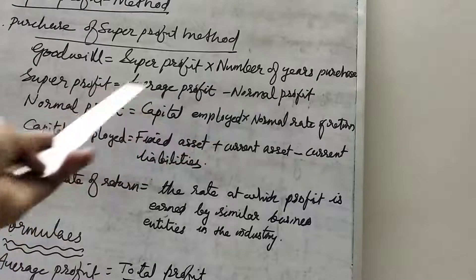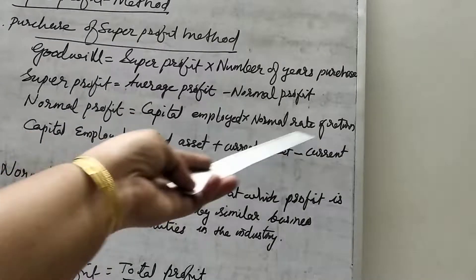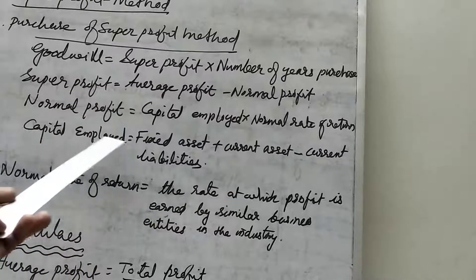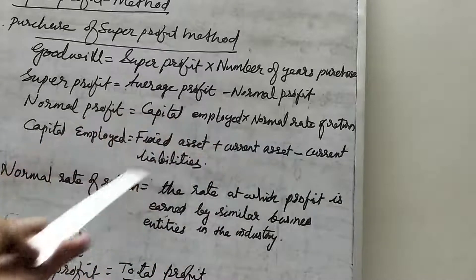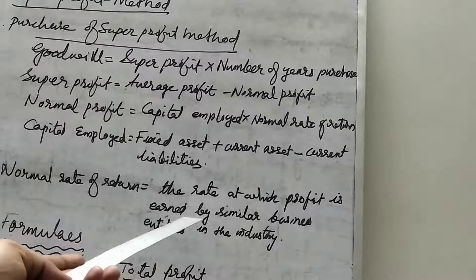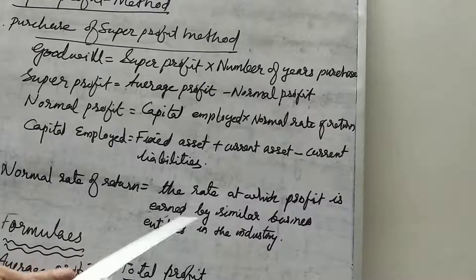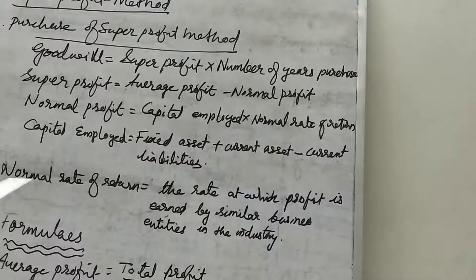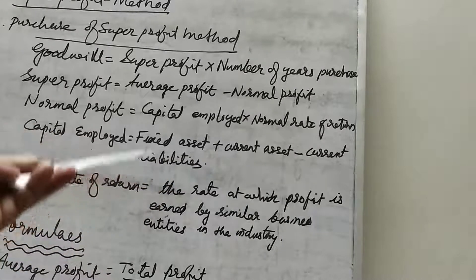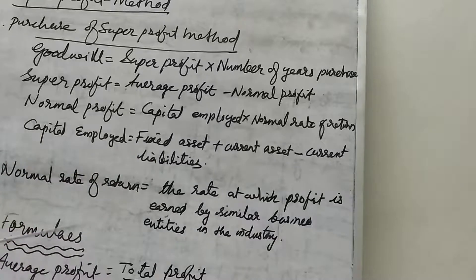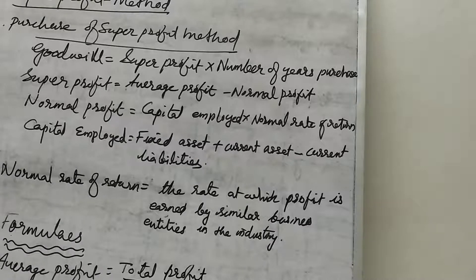To summarize the purchase of super profit method: goodwill equals super profit multiplied by number of years of purchase; super profit equals average profit minus normal profit; normal profit equals capital employed multiplied by normal rate of return; and capital employed equals fixed assets plus current assets minus current liabilities. These values for fixed assets, current assets, and current liabilities are available in the question. This completes the purchase of super profit method.